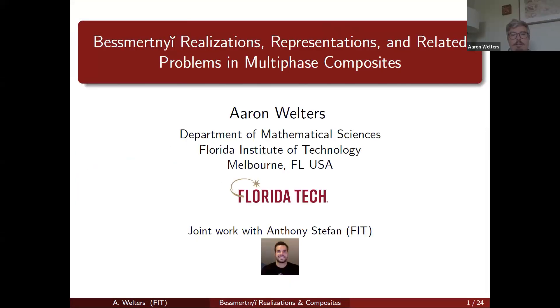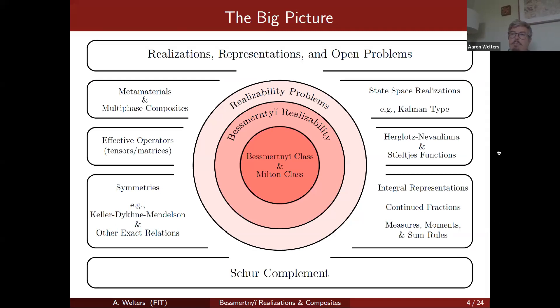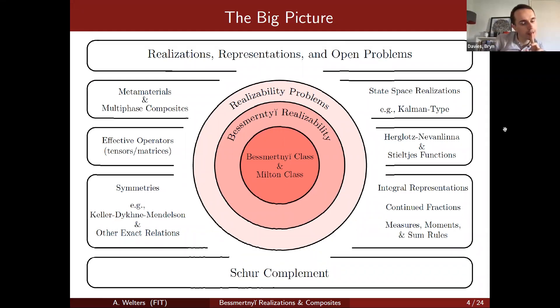Good question, an important question. This represents the big picture. When I go back here in the two variable case, the problems on the realizability theory perspective are about representations. In the theory of composites, the ones that have gained the most traction for solving problems are continued fractions. For instance, Milton-Bergman bounds are based off the two phase two composite conductivity being able to expand it in a continued fraction form.